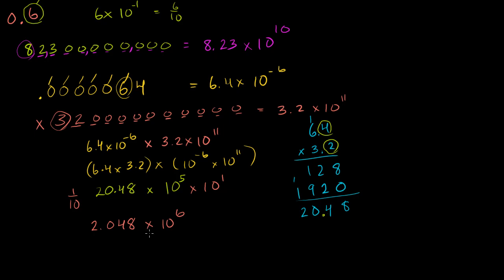And now if you're a stickler about it, this is good scientific notation right there: 2.048 times 10 to the sixth.